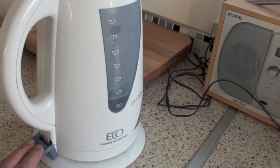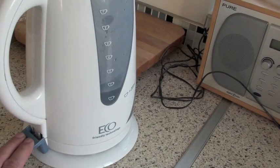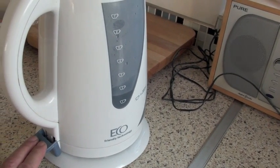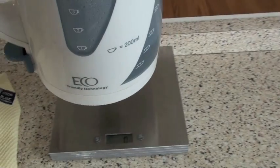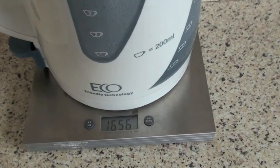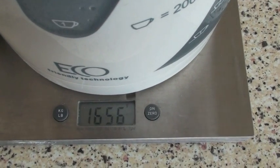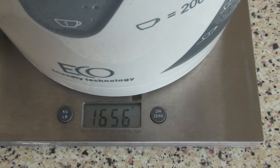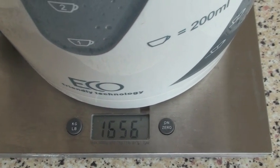The kettle continues to boil for a minute, the vapor escaping into the atmosphere. At the end of the minute, we let the kettle switch off, transfer it back to the digital balance and measure the mass once more. As you can see, it's fallen to 1.656 kilograms.